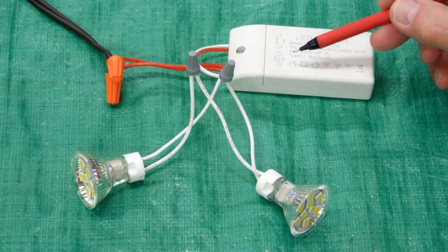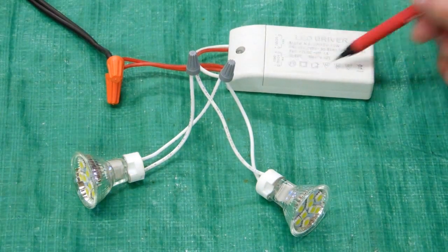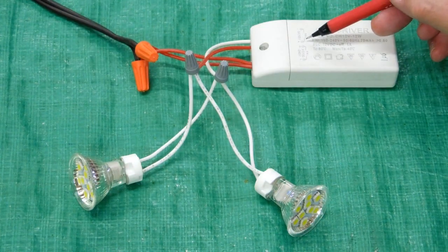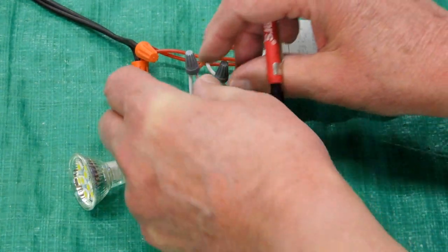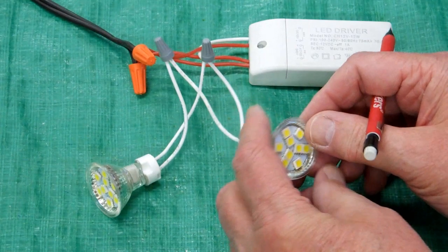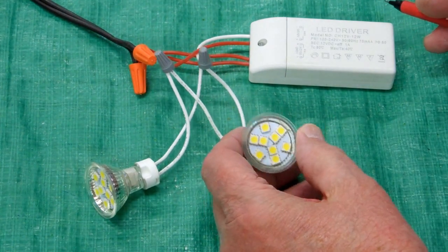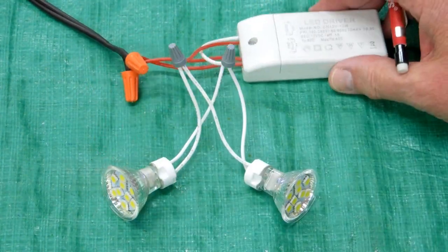The transformer is very clearly marked where the AC connects and then it shows you where the DC connections are. And for these lights you don't have to worry about plus and minus. Just hook them up on the DC side and they'll work.